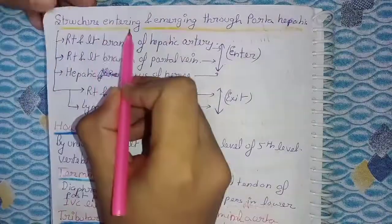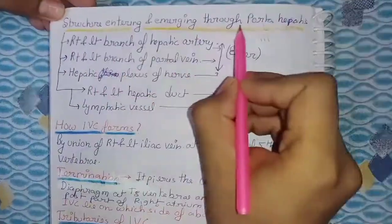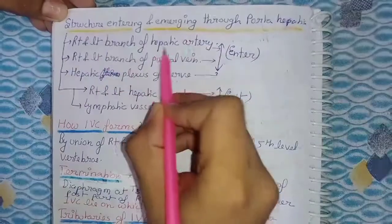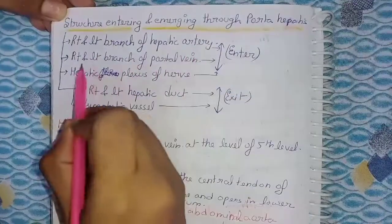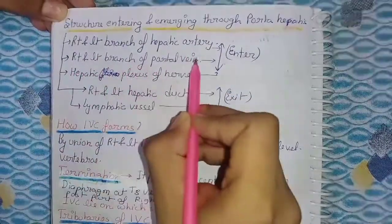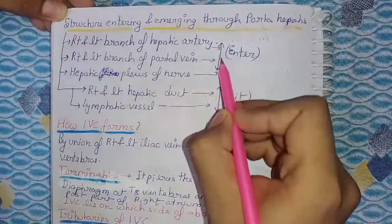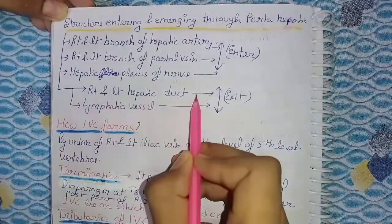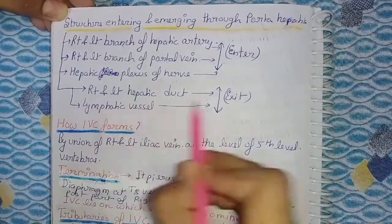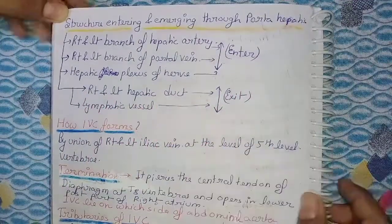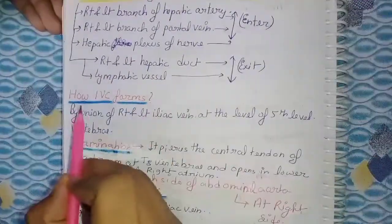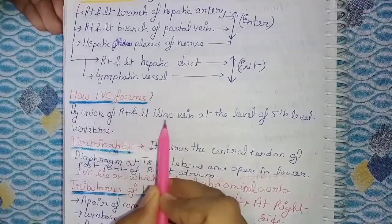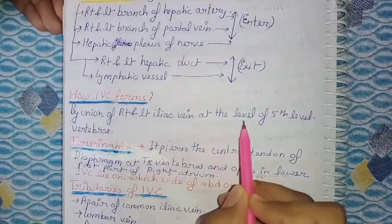Structures entering and emerging through the porta hepatis: entering are the right and left branches of the hepatic artery, right and left branches of the portal vein, and the hepatic plexus of nerves. Exiting are the right and left hepatic ducts and lymphatic vessels.